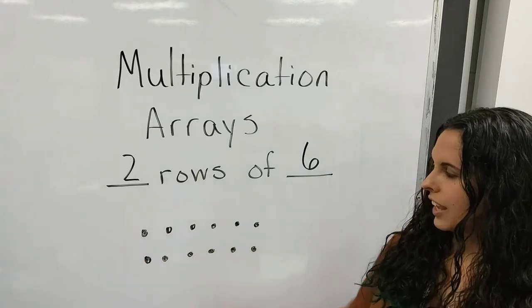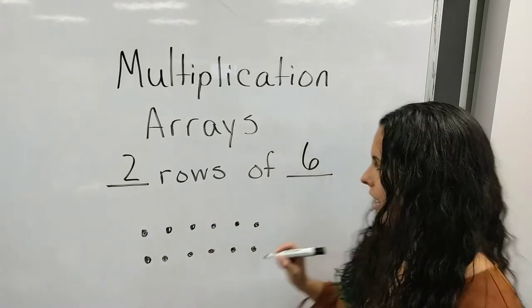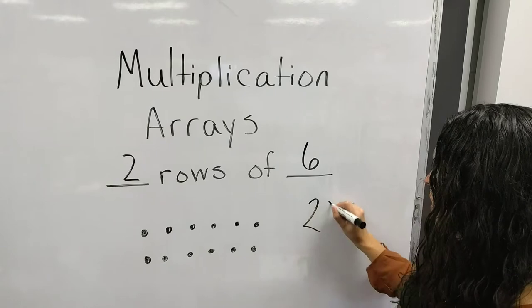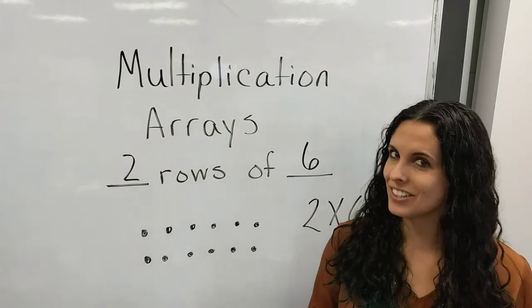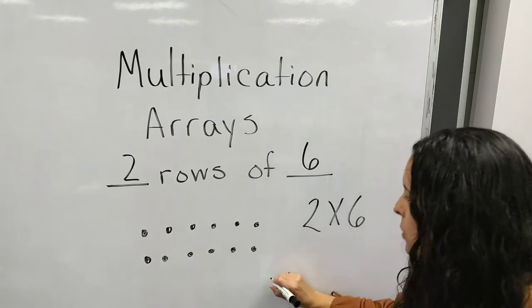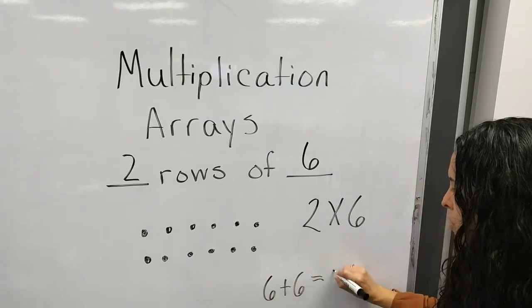So we have two rows with six in each. Your multiplication fact for that is two times six. Your repeated addition fact for that would be six plus six which gives us twelve.